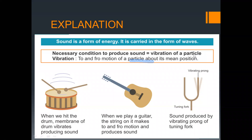Let's have some examples. You can see a drum over here. When we hit the drum, the membrane of the drum vibrates, producing sound. When we hit it, it produces vibrations; this membrane starts vibrating. When it vibrates, it starts generating waves, and these waves travel through air and reach our ear. Our ear detects that vibration, sends it to the brain, and the brain interprets the sound — then we are able to hear it.